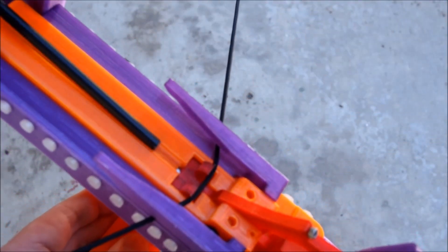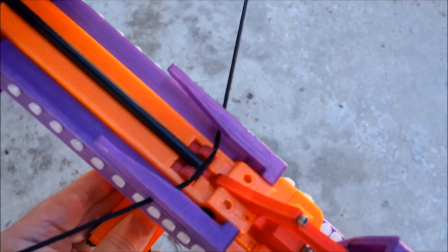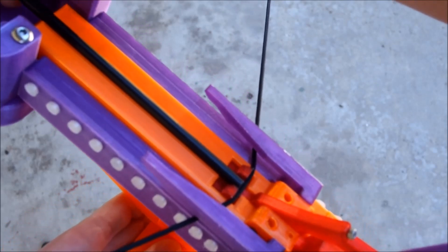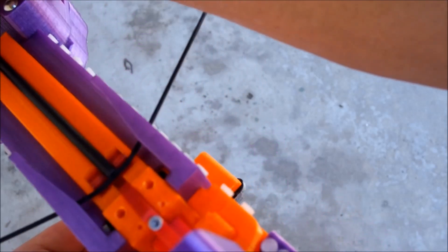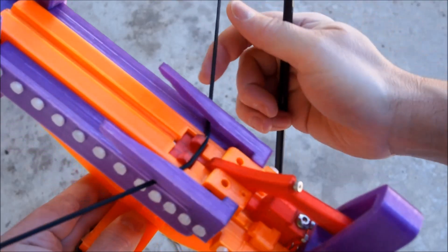And so, again, there's no danger of the string missing the bolt, going under, or jumping above the bolt, making the bolt do something weird like flip around as it's coming off the rail. There's really only one way that that string can go, and that's forward.